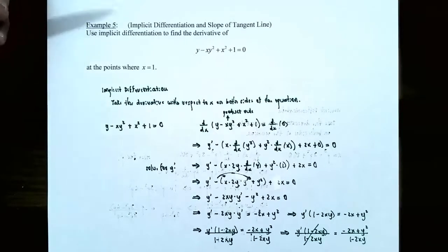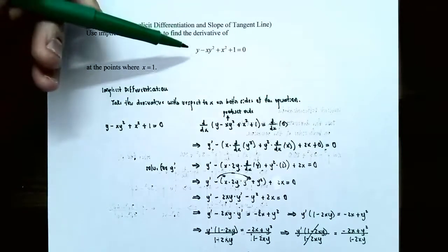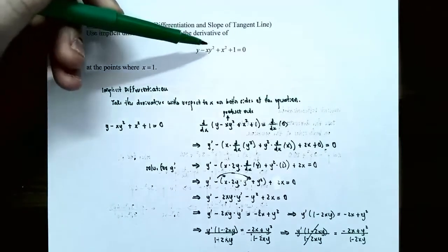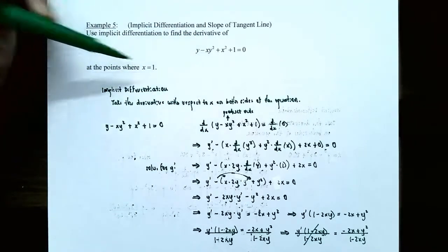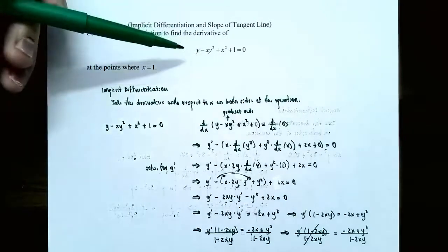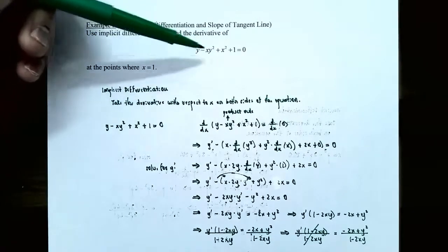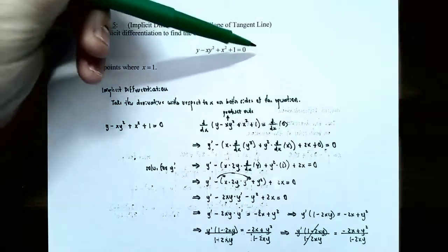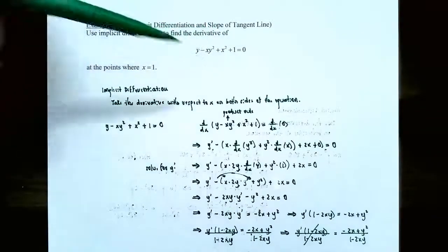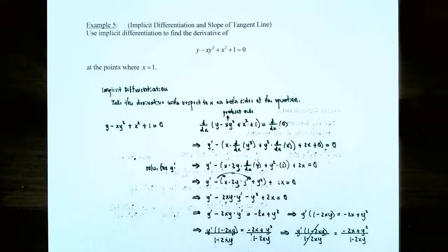Example 5: implicit differentiation and slope of a tangent line. Use implicit differentiation to find the derivative of y minus x times y squared plus x squared plus 1 equals 0, at the points where the x-coordinate is 1. This equation is implicit because it's very difficult to solve for y — you have y in the first term and y squared in the second term. Even if you move x squared and 1 to the other side and factor out y, you'd still have a y inside the parentheses, so we need to use implicit differentiation.